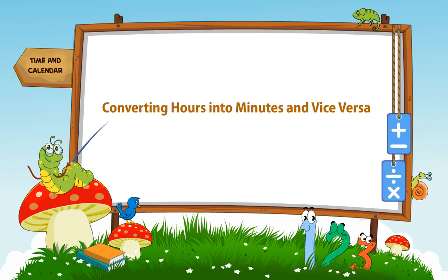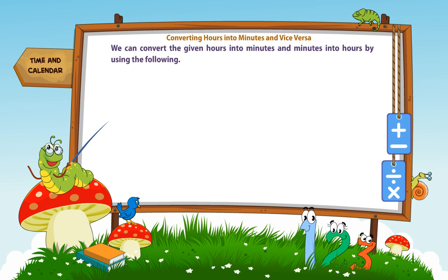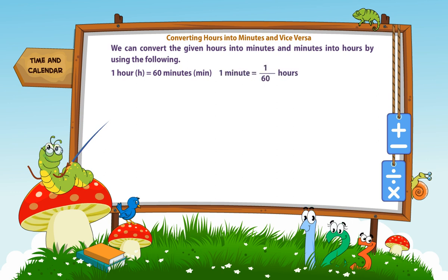Converting hours into minutes and vice versa. We can convert the given hours into minutes and minutes into hours by using the following: 1 hour is equal to 60 minutes, and 1 minute is equal to 1/60 hours.